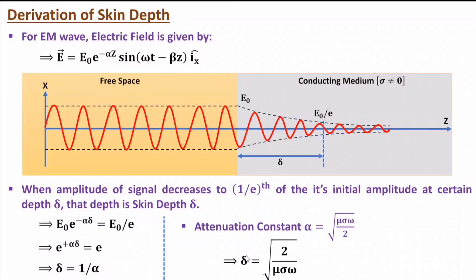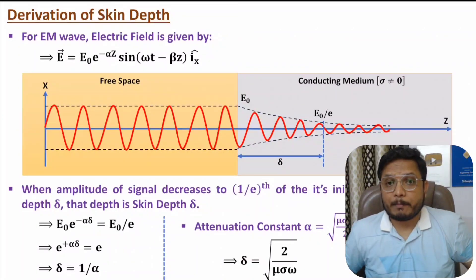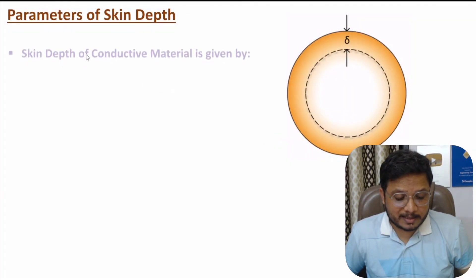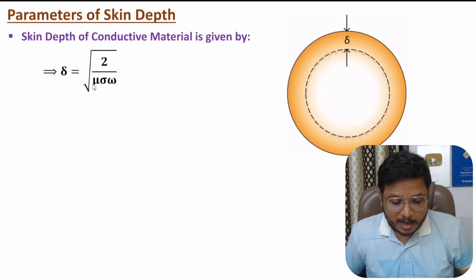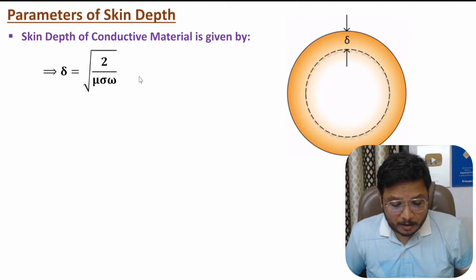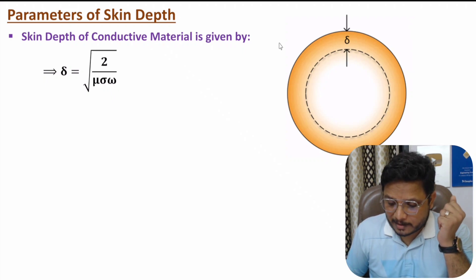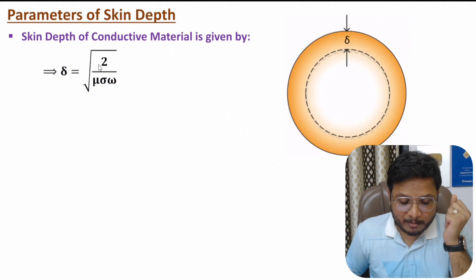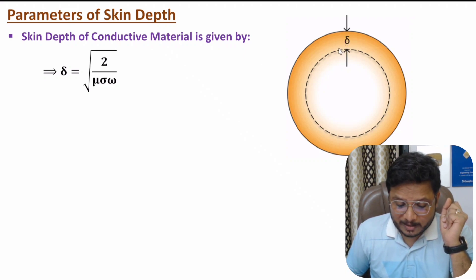This skin depth explains that on the surface we have maximum amplitude of the EM wave, and as you go inside, that amplitude decreases. If you increase the frequency, the value of delta decreases — proportional to 1/√ω. Similarly, if you increase conductivity sigma, the skin depth also decreases proportional to 1/√σ.